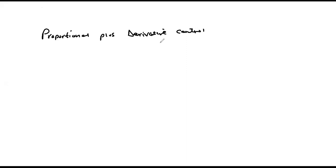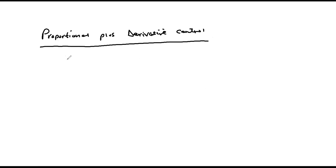We look at the proportional plus derivative controllers, and as the name suggests, the control action is partially proportional and partially a derivative of the error signal, which can be written as u(t) = kp·e(t) + kd·(d/dt)e(t).